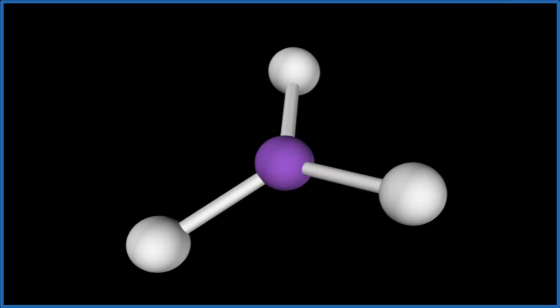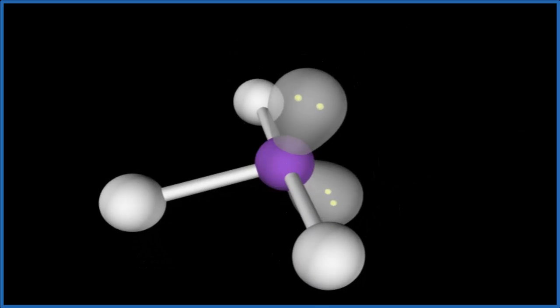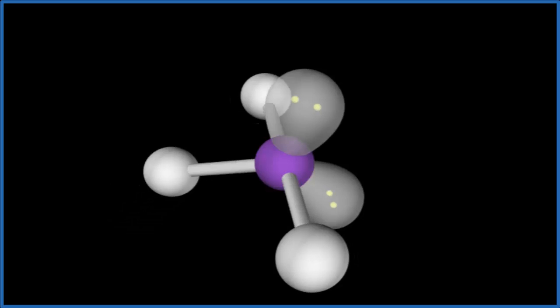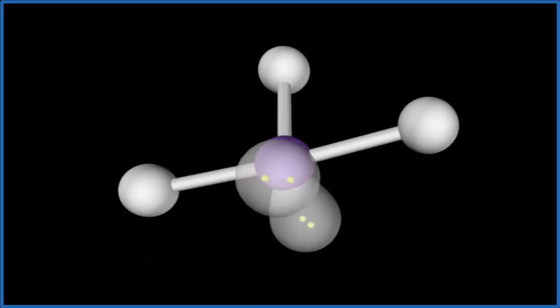Now we have this trigonal planar. And then we have those two lone pairs. They occupy space. We need to add those. So there's one, two. So when we look at this, we see we have what's called a T-shaped molecular geometry.